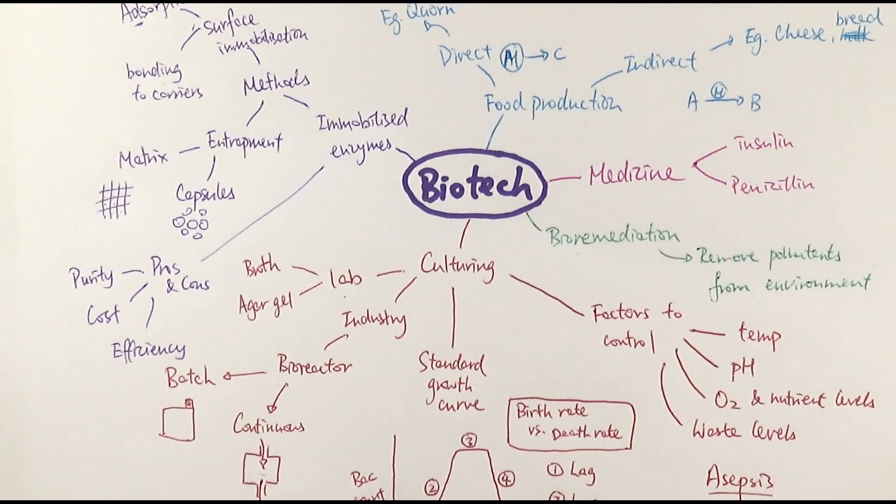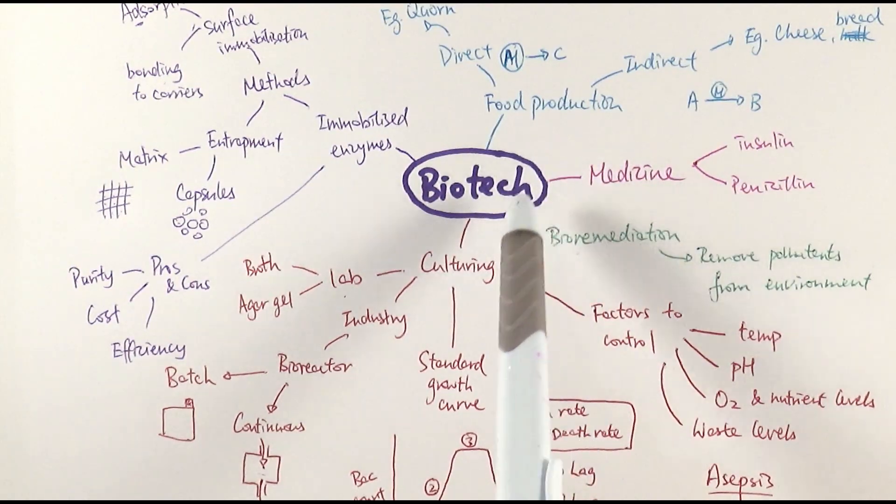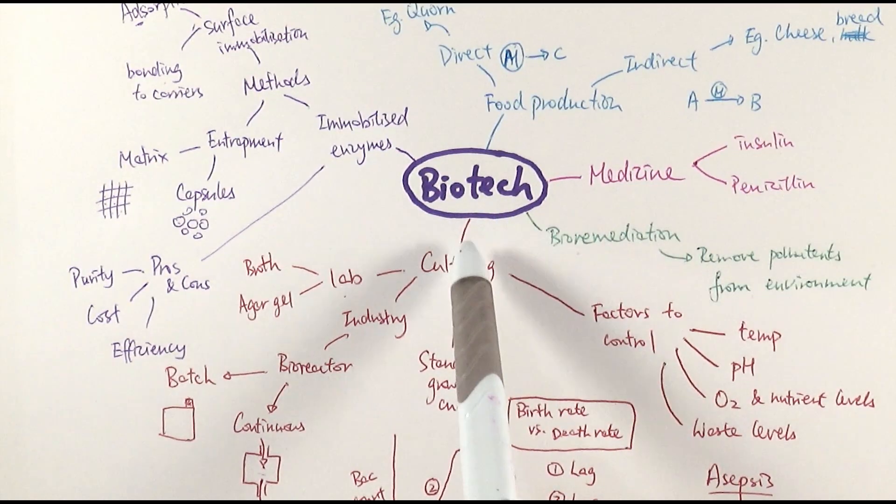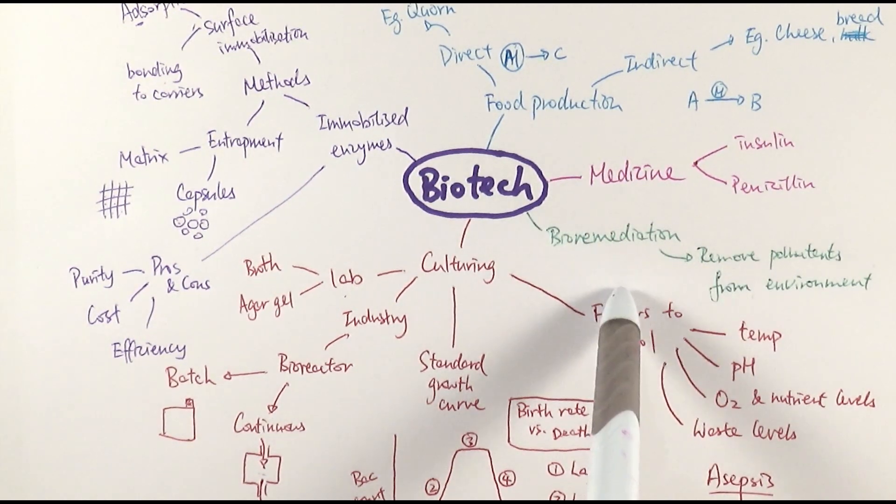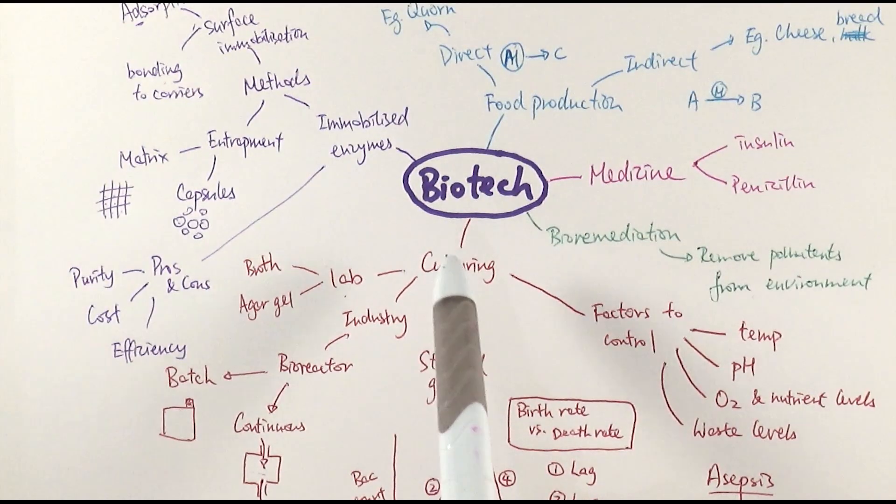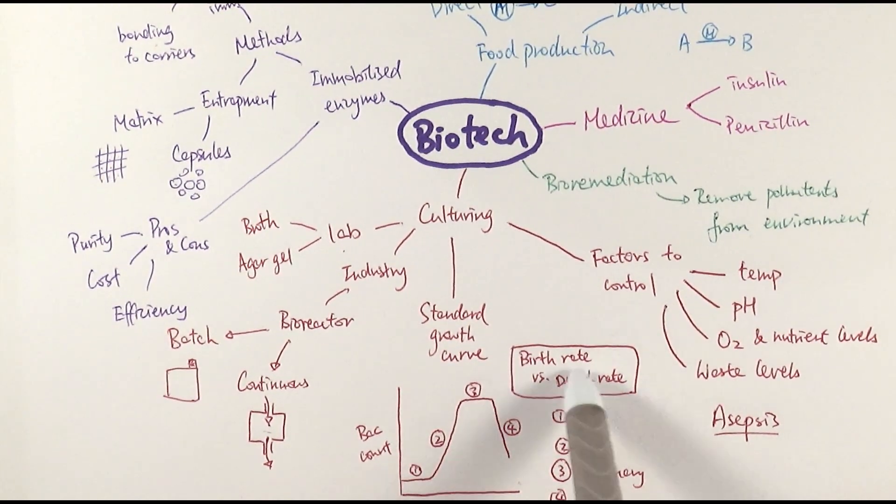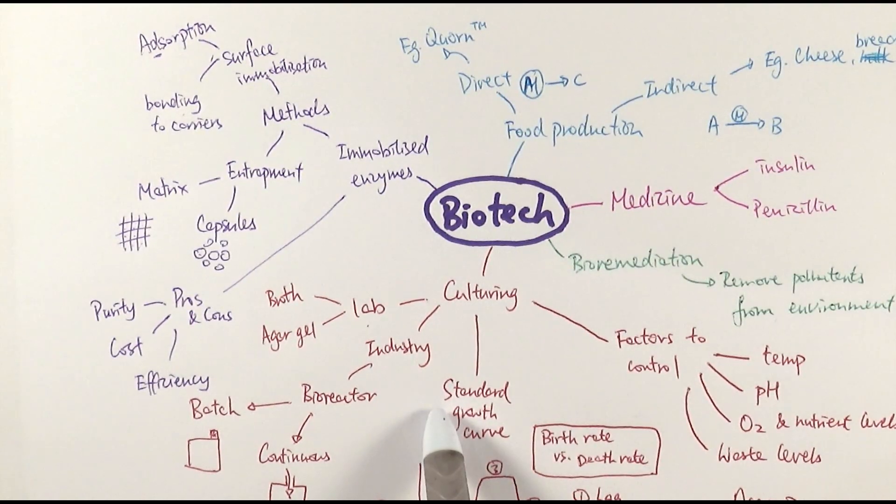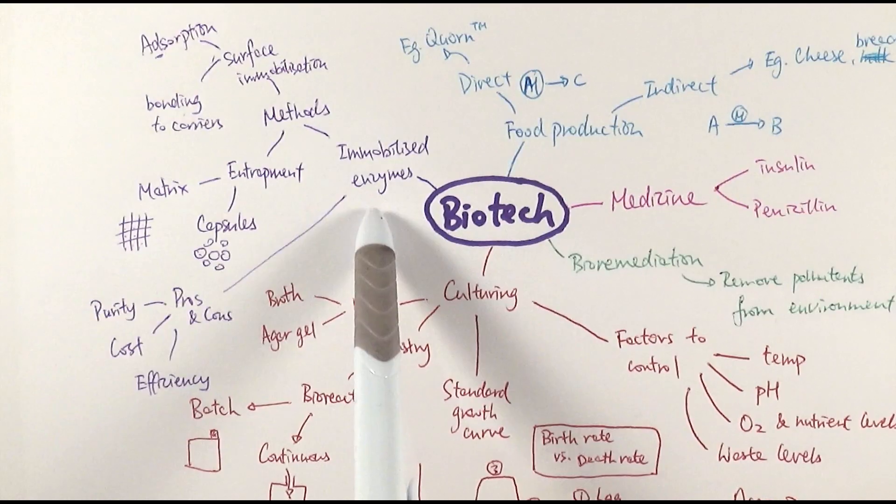So it's quite a lot of information, but simply put, number one, food production, direct and indirect food production. Be aware of what the examples are and be ready to illustrate the pros and cons as well. Medicine, there are two types. Insulin and penicillin are the key ones you need to be aware of. Be aware you can use microorganisms to make these two things. Lots of links of making insulin by genetic engineering in chapter 21. Be aware bioremediation is the process in which we use microorganisms to clean the environment, namely genetic engineered bacteria to clean oil spills. Culturing, a big part. You can have two types. You need to be very much aware of the standard growth curve, describe and explain the graph, and the factors to control. Then finally, immobilized enzymes, which is very different from the rest we've been talking about. Be aware of the four different methods: adsorption, bonding to carriers, matrix and capsules. And the pros and cons, comparing immobilized enzymes to isolated enzymes. These are the key things in biotechnology.